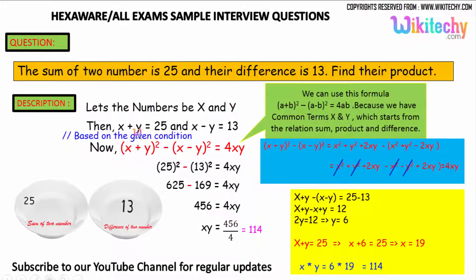x + y = 25, the sum of two numbers is 25. The difference x - y = 13. So we can use this formula: (a + b)² - (a - b)² gives us a² + b² + 2ab, and a² + b² - 2ab.